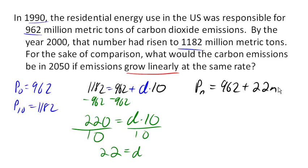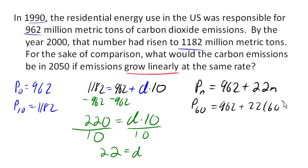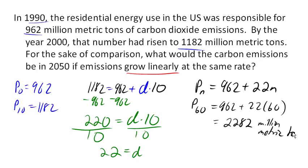If we predict the emissions in 2050 — 60 years after 1990 — then we would predict 22 times 60. Using a calculator, that gives 2282 million metric tons of emissions, which is a fair amount less than the exponential prediction of 3308.